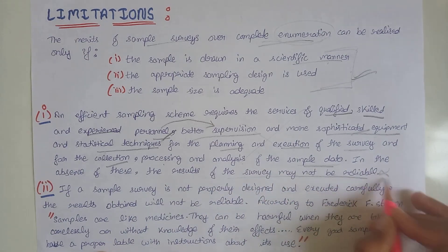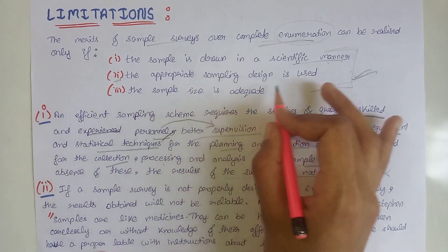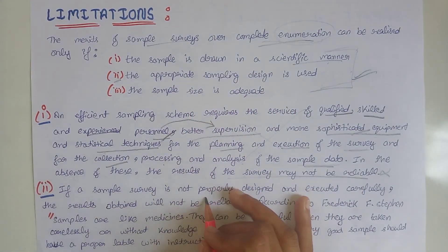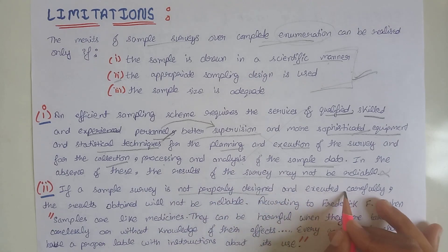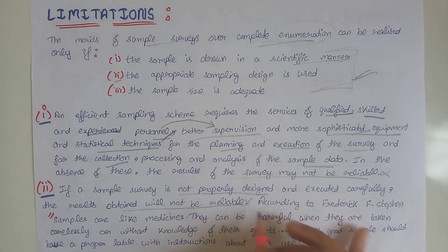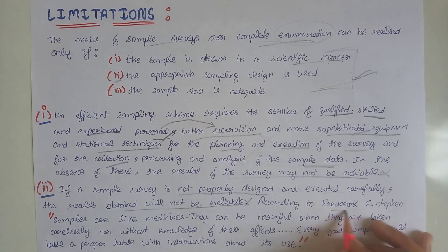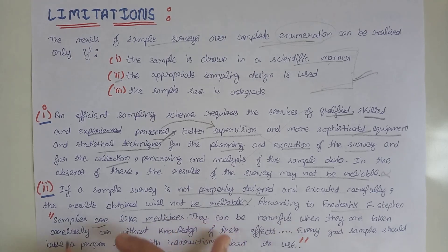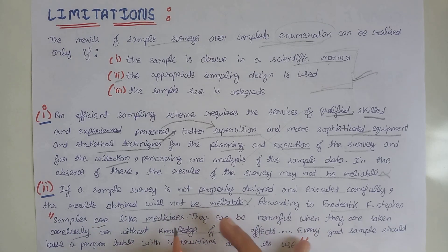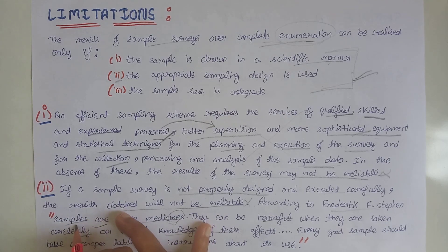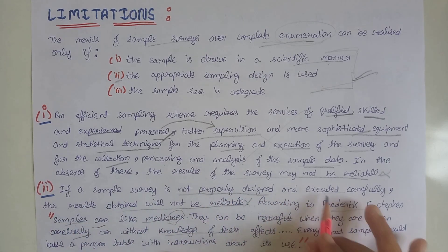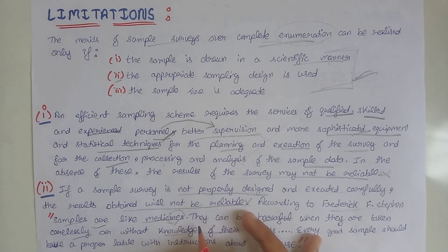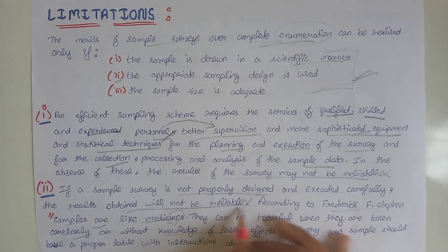The second condition is that an appropriate sampling design is used. If the sample survey is not properly designed or executed, the results will not be reliable. As Frederick F. Stephen says, samples are like medicines — if taken carelessly or without knowledge of their effects, the results can be harmful. Similarly, if our sample is not properly designed and carefully executed, the results of the survey may not be reliable.